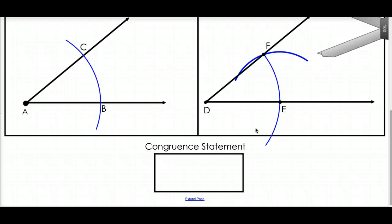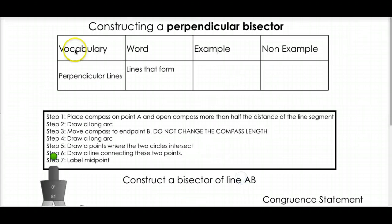So, to write a quick congruent statement, I would say, now that I know these two are congruent, angle CAB is congruent to angle FDE.